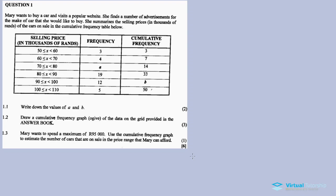She summarizes the selling prices in thousands of rand of the cars on sale in a cumulative frequency table. We have a selling price range from 50,000 to 60,000 rand, with 3 advertisements. Then the price range 60,000 to 70,000 rand has 4 advertisements. The first column shows the selling price range, the second column shows frequency, and the last column shows cumulative frequency. Part 1.1: write down the values of A and B.